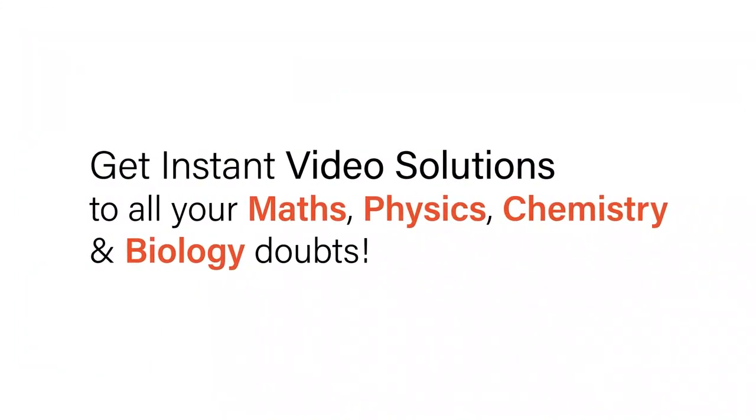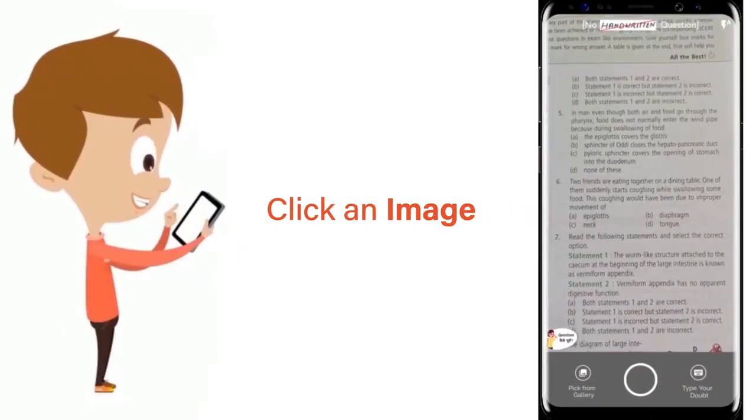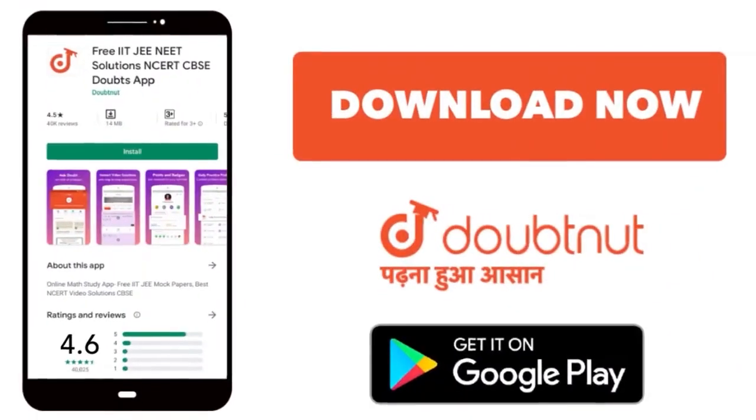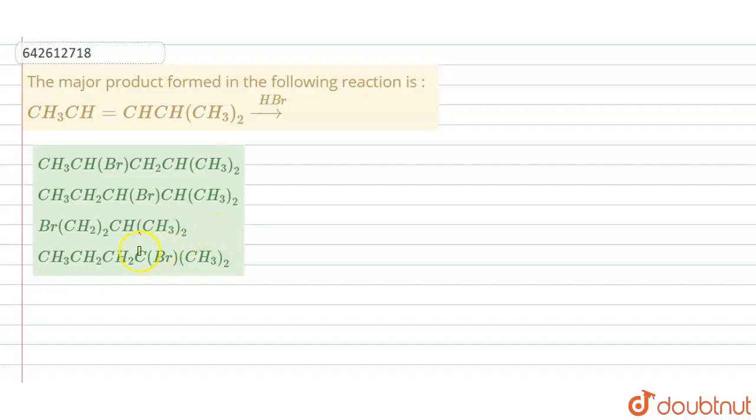With Doubtnut, get instant video solutions to all your maths, physics, chemistry, and biology doubts. Just click the image of the question, crop the question, and get instant video solution. Download Doubtnut app today. Hello students, the question says that the major product formed in the following reaction is when this alkene is reacted in presence of reagent HBr.